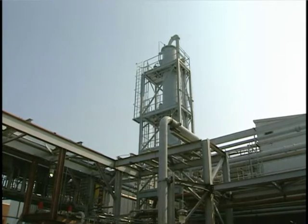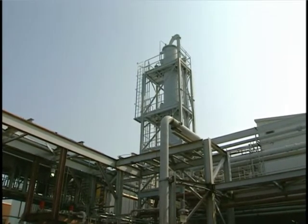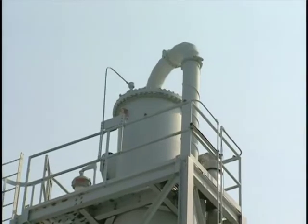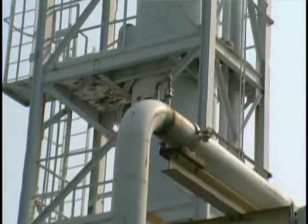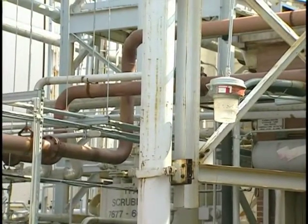Like spray towers, packed beds are classified according to the relative direction of the gas and liquid flows. In the counter-current design, the liquid is introduced at the top of the tower using sprays or weirs and flows downward over the packing material. The contaminated gas stream enters at the bottom of the tower and flows upward through the packing. Because of limitations in the amount of liquid that will move downward against the upward gas flow, this orientation is susceptible to plugging when the concentration of solid particles is high.